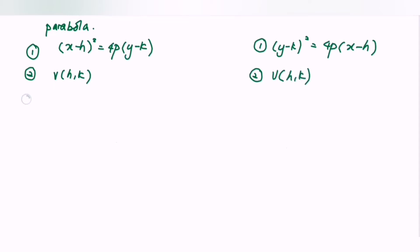Step number three, we compare the equation given with the standard form. For the left hand side, we must find the value of p by comparing 4p with the question. The same goes for the right hand side — finding p is our main focus.